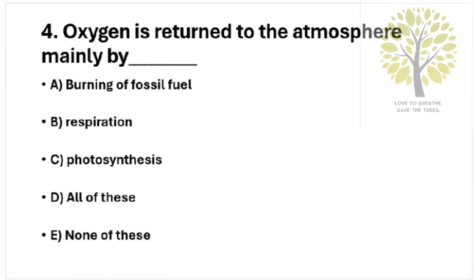Question number 4: Oxygen is returned to the atmosphere mainly by. Option A: Burning of fossil fuel. Option B: Respiration. Option C: Photosynthesis. Option D: All of these. Option E: None of these. The answer is Option C, Photosynthesis.